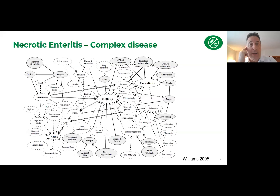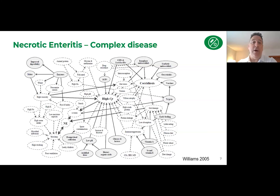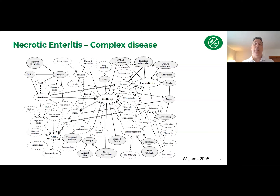Necrotic enteritis is a complex disease. I show this slide to illustrate the complexity of factors that can predispose to it: nutritional management, immunosuppression, stocking density, types of raw materials, inclusion of nutritional supplements, and more. The key message is that it's complex and there is no single silver bullet, because no technology in feed or otherwise will tackle all of these interacting factors. When looking at controlling necrotic enteritis, it's really best to take a holistic approach and tackle the challenge from a number of different avenues.